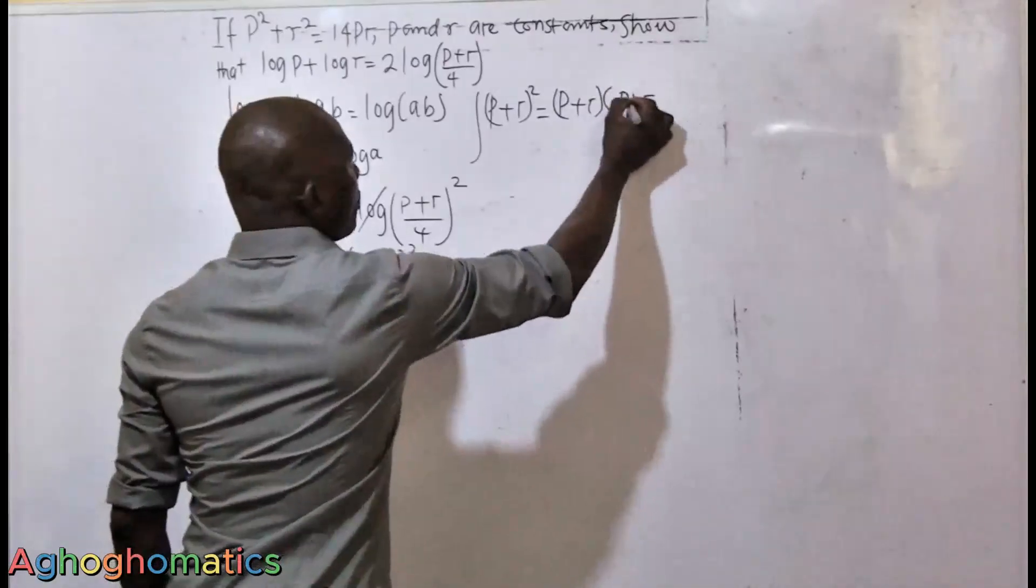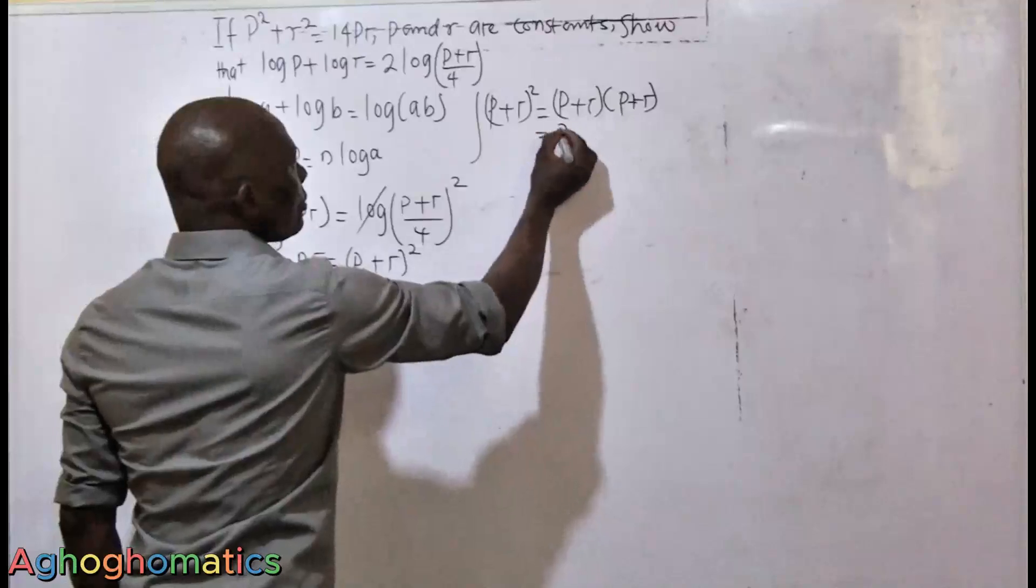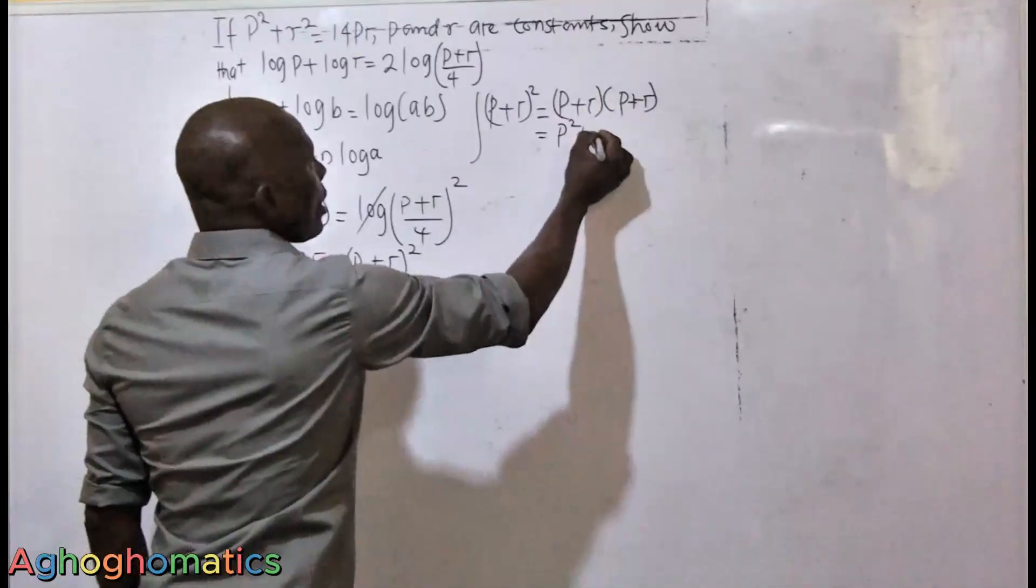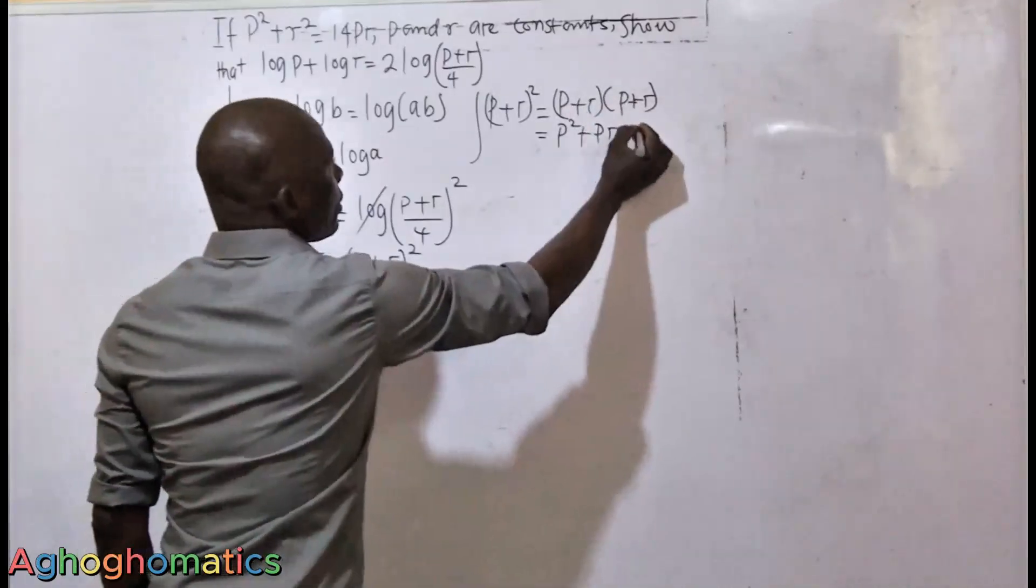This one simply means (P plus R) multiplying (P plus R). And if we do this, P times P is P squared, then P times R is PR, then R times P is also PR, and R times R is R squared.